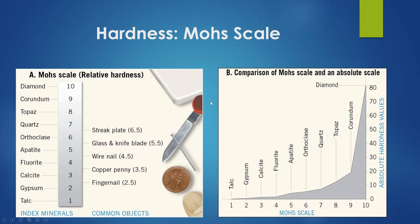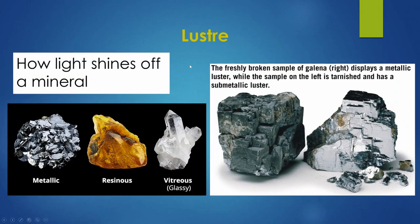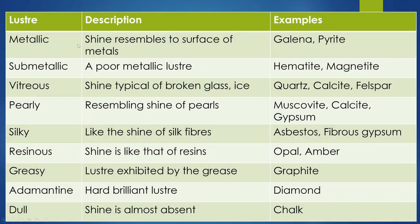Luster describes how light shines off a mineral: glassy, otherwise known as vitreous, is that real crystal-like look; resinous gives you a good idea of resin; and metallic is your shiny metal-looking finish. The issue with luster is it needs to be fresh — galena rusts when out in the air, so you have to break it open to see the true luster before it tarnishes.